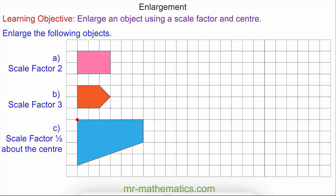In question A the rectangle has a width of 2 and a length of 3. When we enlarge it by a scale factor of 2 we make each length twice as big, so a 2 becomes 4 and the length of 3 becomes a length of 6 in the image. So this is our enlarged rectangle.